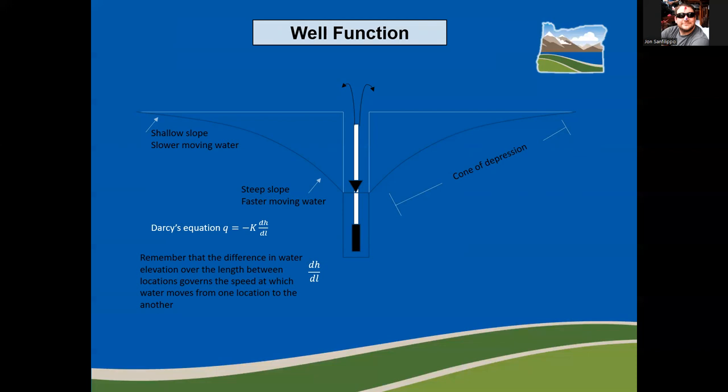Water closest to the well will always be moving the fastest, while it will gradually be moving slower and slower the further you get away from the well.